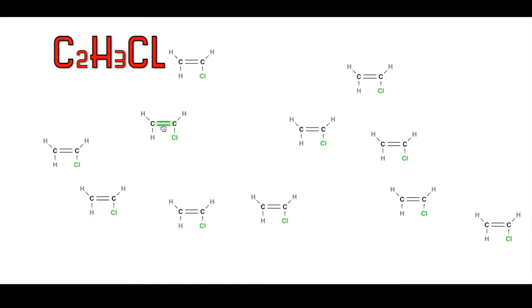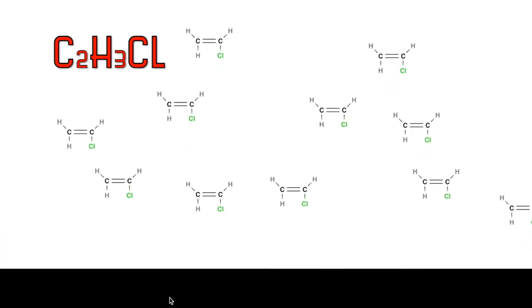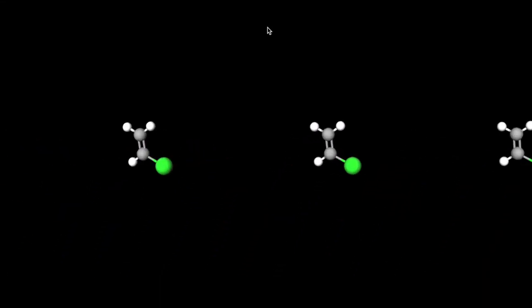It has a double bond between its two carbon atoms as well as a chlorine atom. If we look down at the 3D ball and stick models, we can see that chloroethene has a trigonal planar structure.